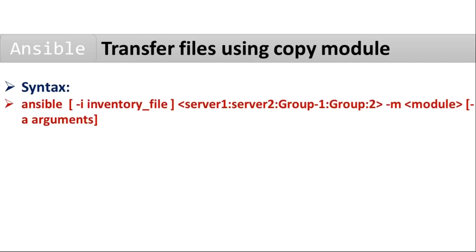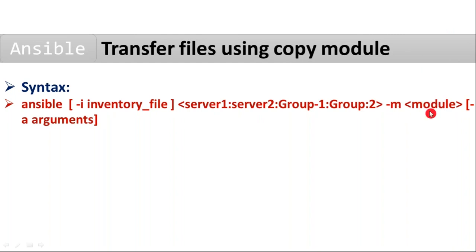We have seen this in our previous videos. If you want to work with any other inventory, you have to mention hyphen i with your inventory file. But if you want to work with the default inventory which is in your ansible.cfg file, you don't need to mention your inventory file location. Simply: ansible, some servers or groups or combination of servers and groups, then hyphen m for your required module, then hyphen a for the module's arguments.